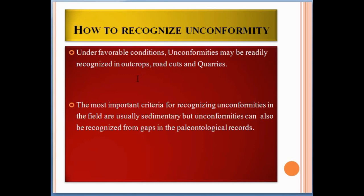How to recognize unconformity in the field: under favorable conditions, unconformities may be readily recognized in outcrops, road cuts, and quarries. The most important criteria for recognizing unconformities in the field are usually sedimentary, but unconformities can also be recognized from gaps in the paleontological records. Unconformity can be recognized in sedimentary terrain easily, and people can also identify unconformity in paleontological records using fossil indicators.